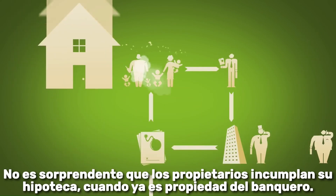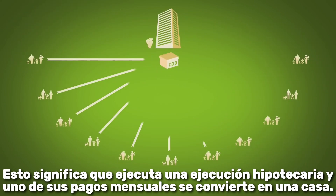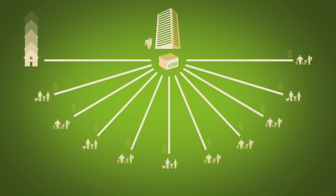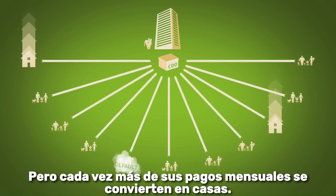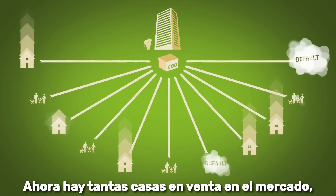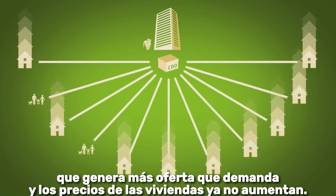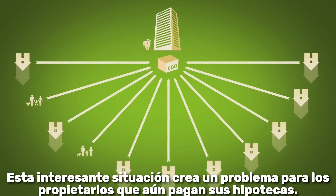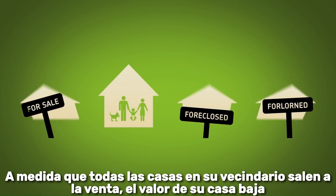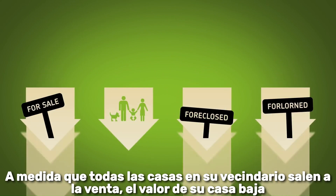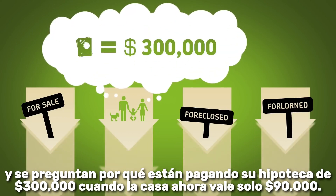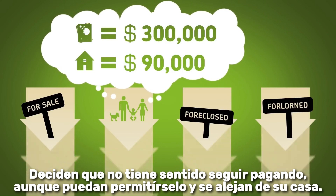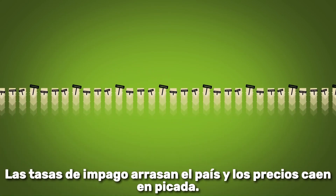Not surprisingly, the homeowners default on their mortgage, which at this moment is owned by the banker. He forecloses and his monthly payments start turning into houses. More and more of his monthly payments turn into houses, and now there are so many houses for sale on the market — more supply than demand — and housing prices aren't rising anymore. In fact, they plummet. This creates an interesting problem for homeowners still paying their mortgages: as all the houses in their neighborhood go up for sale, the value of their house goes down, and they start to wonder why they're paying back their $300,000 mortgage when the house is now worth only $90,000. They walk away. Default rates sweep the country and prices plummet.